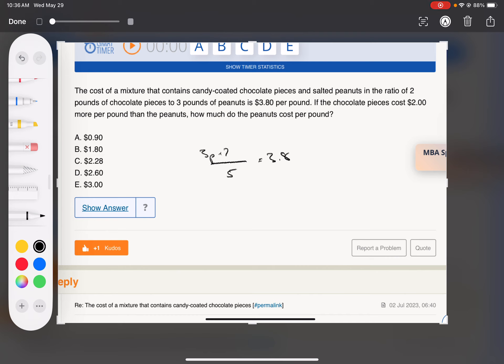then two pounds of chocolate, which is basically P plus 2 because it's two dollars more per pound than the peanuts. So I can put it all in terms of P. I'm going to solve how much peanuts cost per pound.